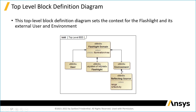These are aggregated together into a common block called 'flashlight domain,' which serves as the context for the flashlight — a higher-level context that brings together all of the relevant elements into one shared context. You also see that that shared context has an attribute or a value property, in systems language called MOE illumination area.